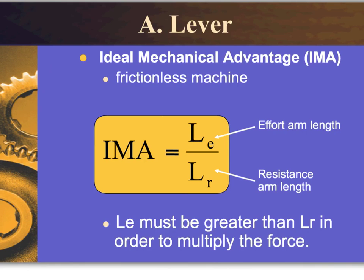The ideal mechanical advantage assumes friction is absent in the machine. While that's not truly the case, determining the ideal mechanical advantage lets us compare it to the actual efficiency of the machine. The formula is effort arm length divided by resistant arm length. The effort arm length must be greater than the resistance in order to multiply the force.